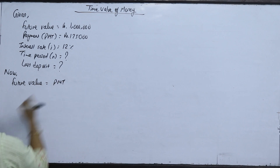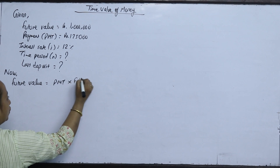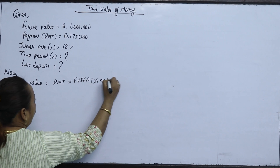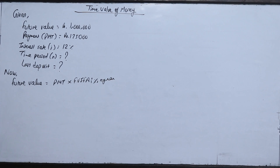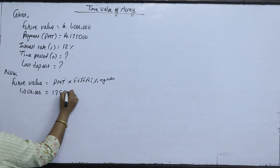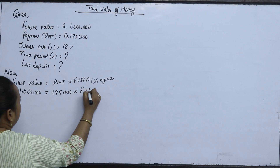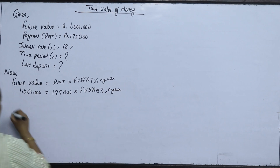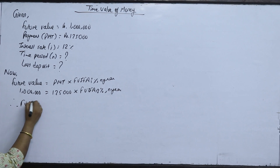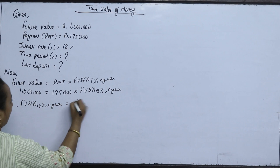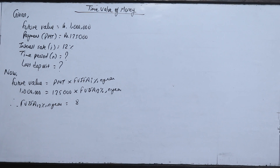The formula is: Payment into FVIFA, I percent annual. This is 1,25,000 into FVIFA, 20 percent, n years. This means FVIFA at 20 percent, for 8 years.